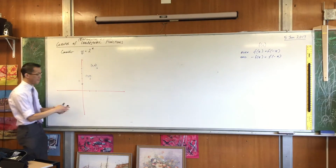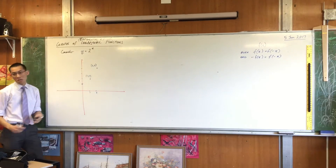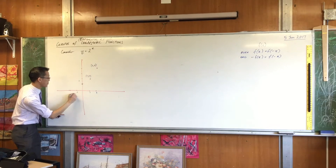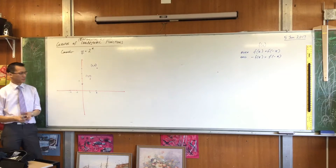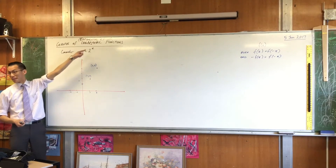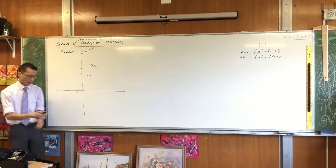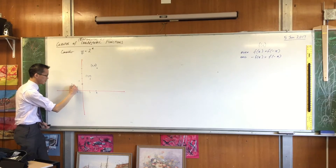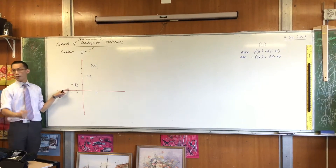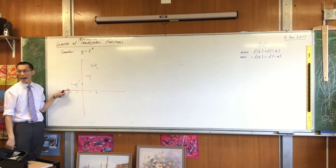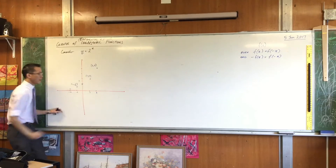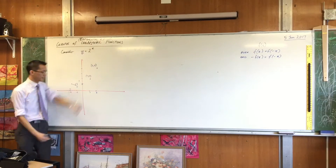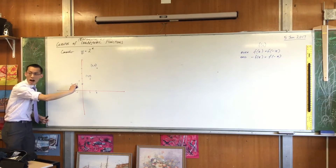Since I have x equals 1 and 2 already plotted, it makes sense to put x equals negative 1 and negative 2 on there. We know what negative indices do — 2 to the power of negative 1 is a half. So that's about halfway down. And if we go over another step, 2 to the power of negative 2 gives a quarter. Just as going from left to right the distances vertically doubled, going from right to left the distances are halving.